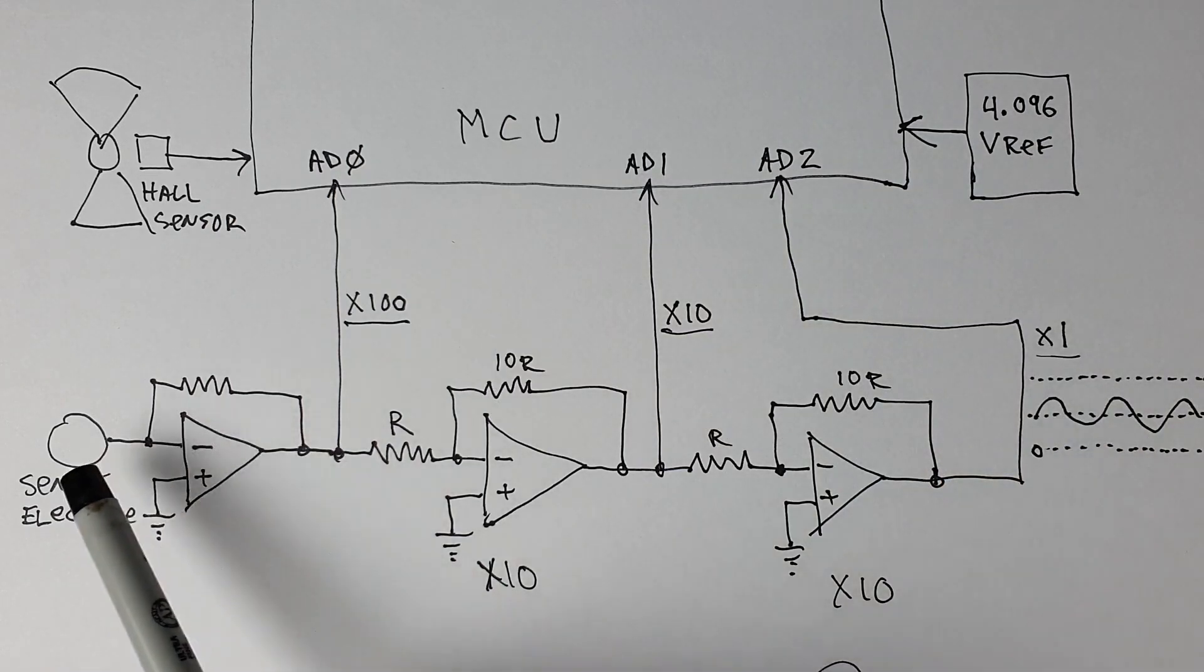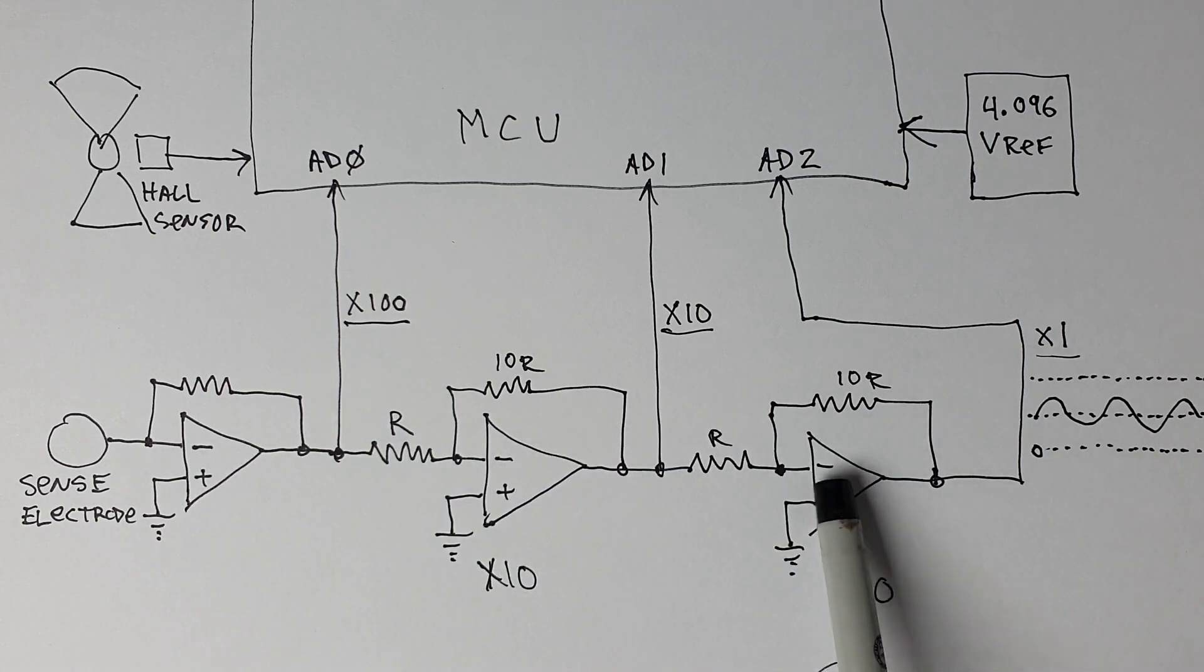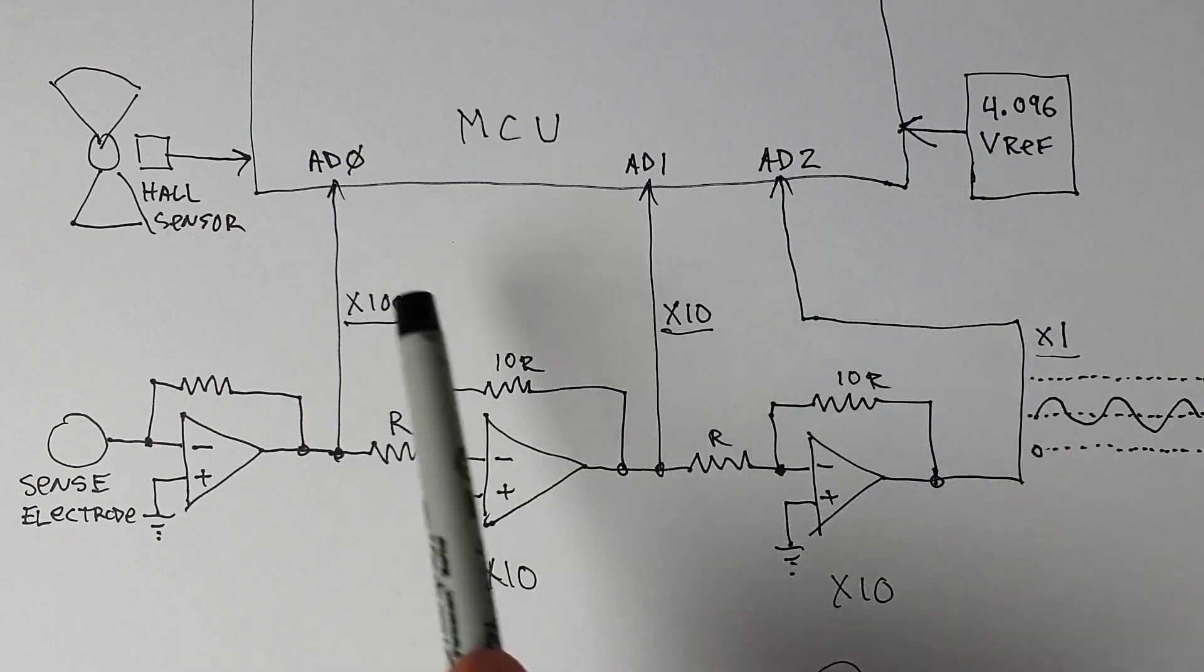We have our sense electrode, our preamp, and two gain stages. That gives us the ability to tap off of the signal chain at three places.